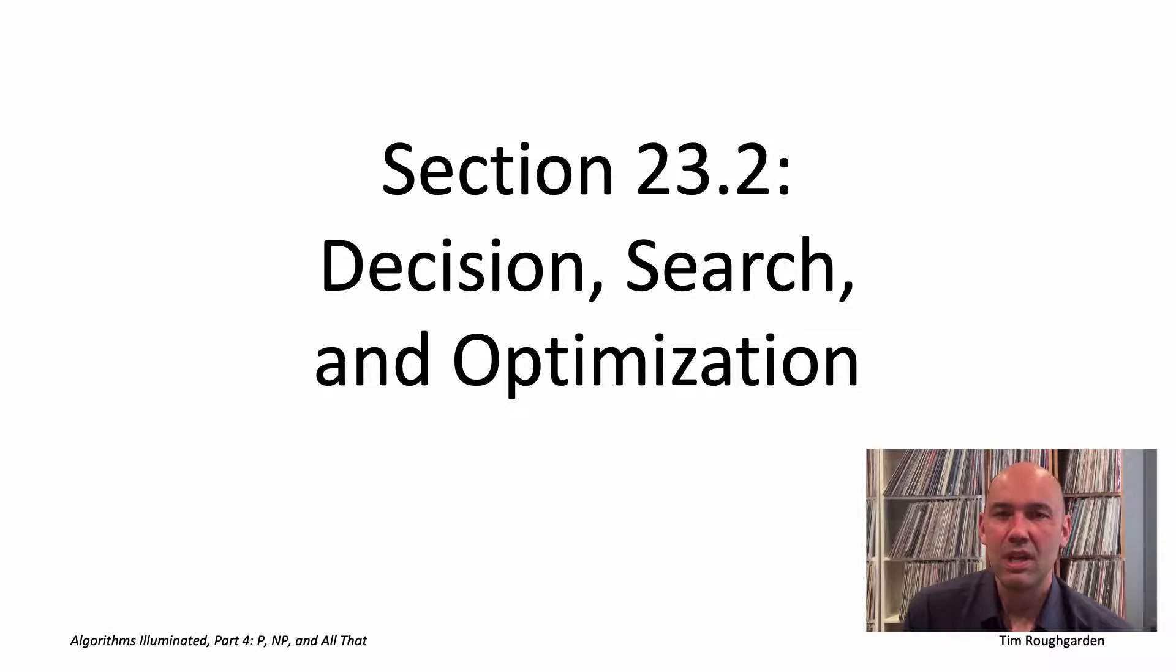Hi everyone, and welcome to this video that accompanies Section 23.2 of the book Algorithms Illuminated, Part 4. It's a section about decision, search, and optimization.